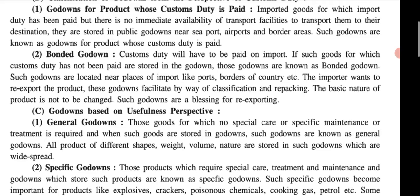Such godowns are located near the place of import like ports and country borders. This facility is used when the importer wants to re-export the product. For example, if I import some goods from Australia and then export them to America, the goods are kept at the port and re-exported without being used domestically.